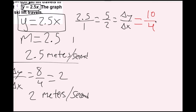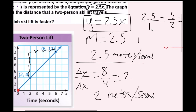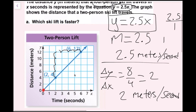So I'll go up 10 and then right 4 — that's my second point. Now that I have my two points, I can draw a line through this graph, and in this case I'm going to do a ray. So now I have graphed the four-person ski lift.